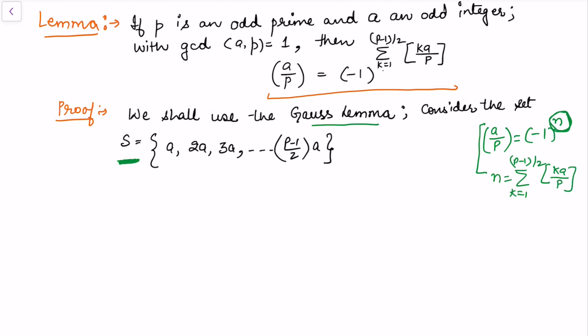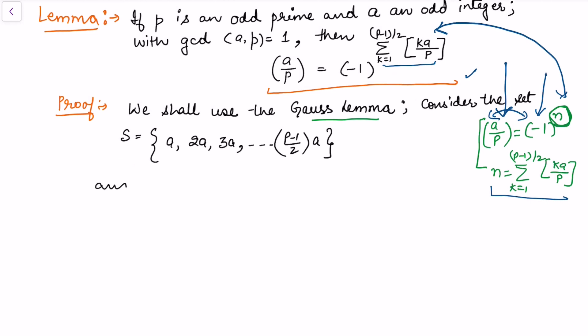If I can show that the exponent power equals that summation, then by Gauss's lemma the result is proved, because on the left hand side I have (a/p), and the only thing remaining is to show that the sum of floor(ka/p) equals n. So let's proceed to prove this.